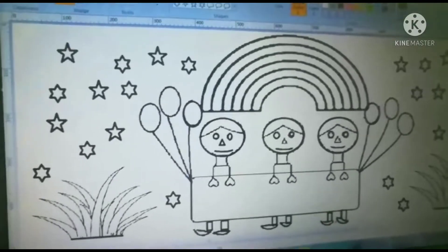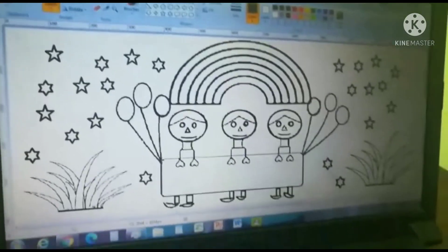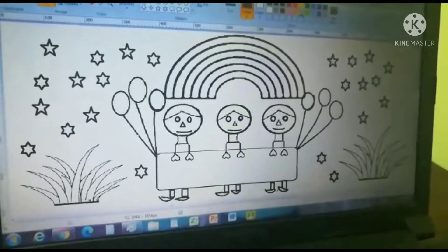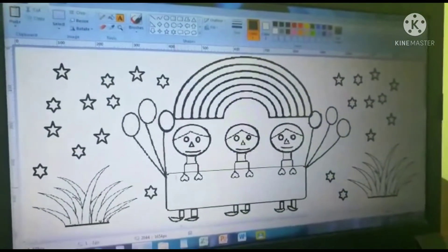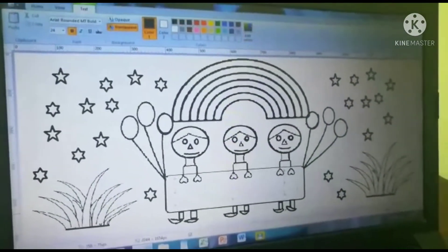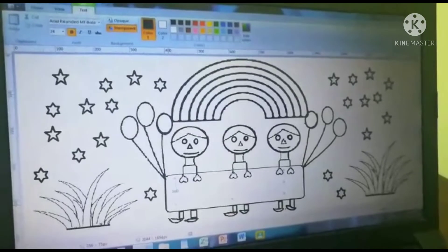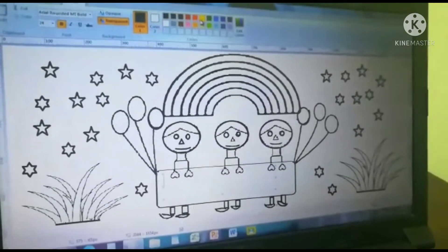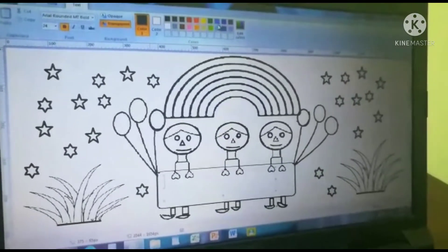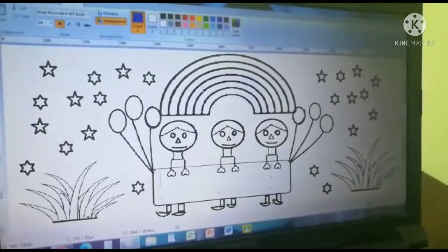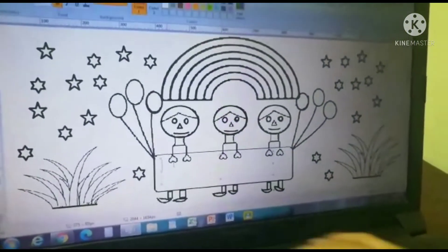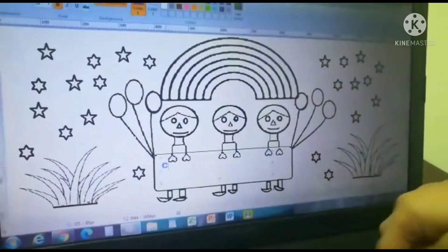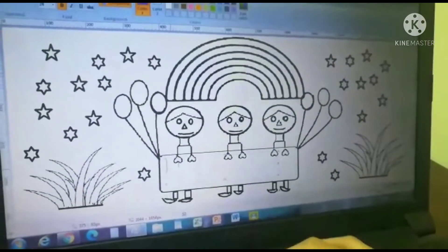Now I am going to write Happy Friendship Day. Press the A. Go to color, I am keeping blue. You can keep any color. I am writing in that box.